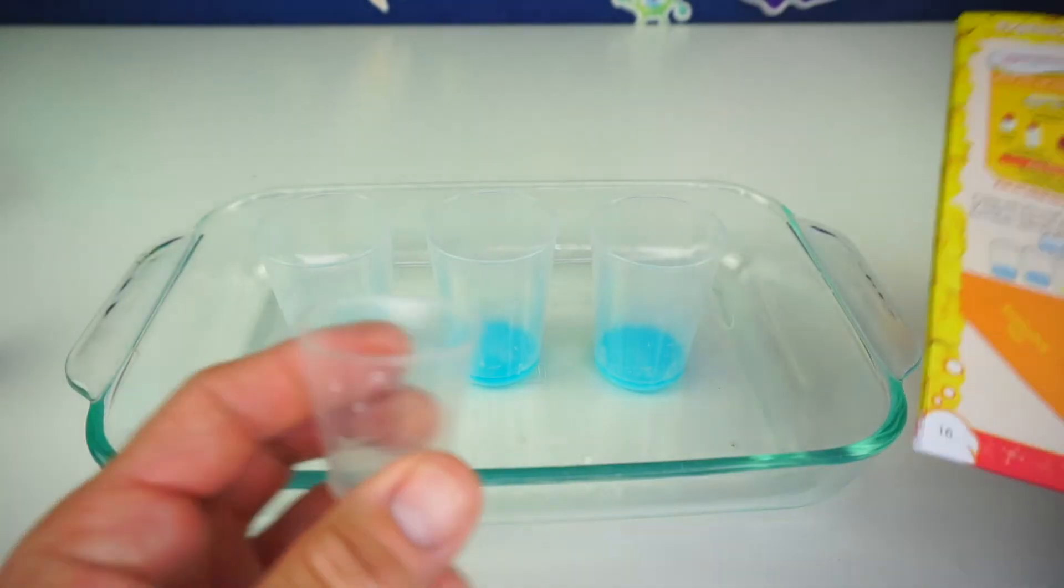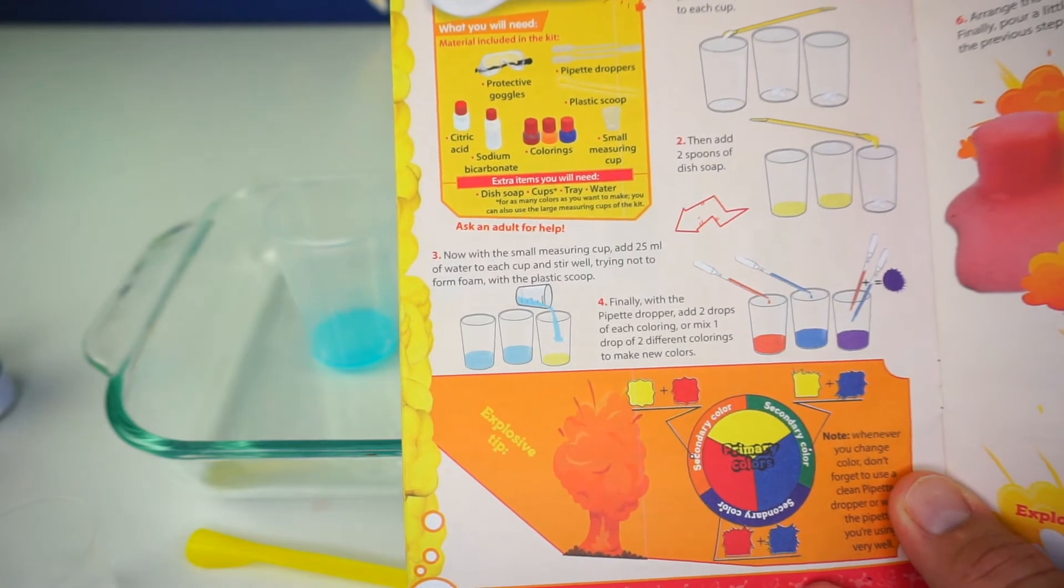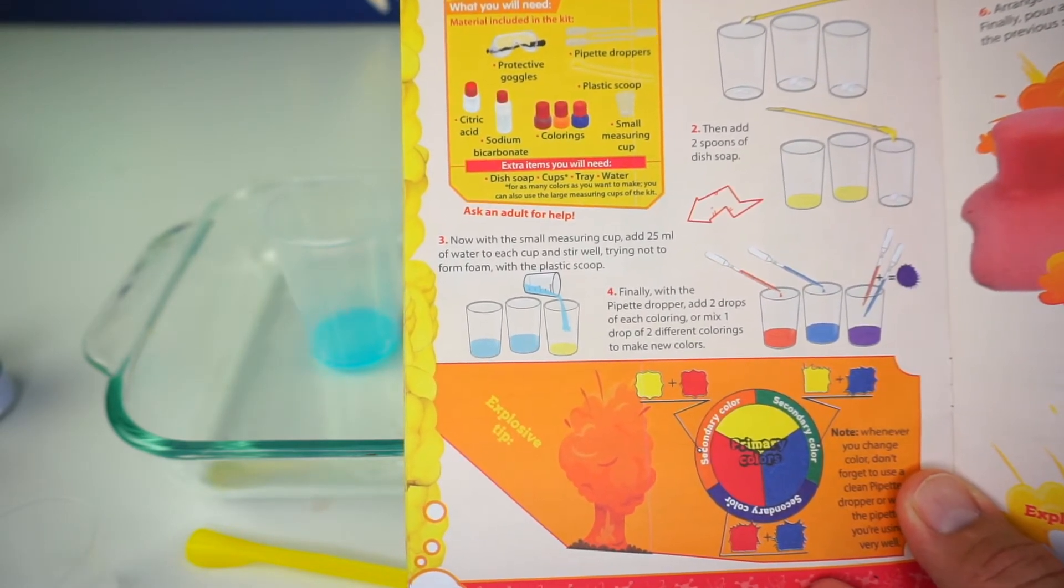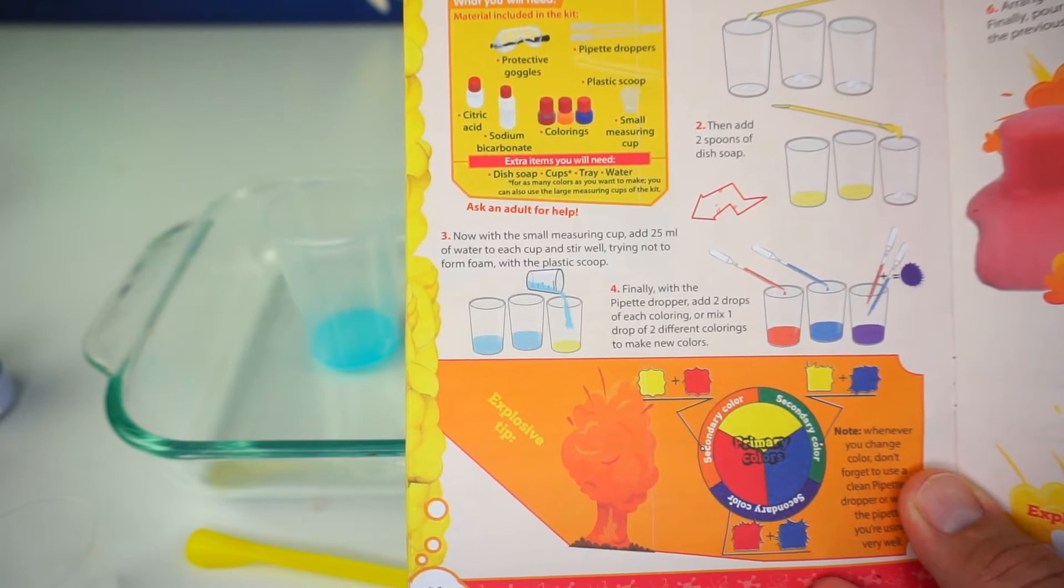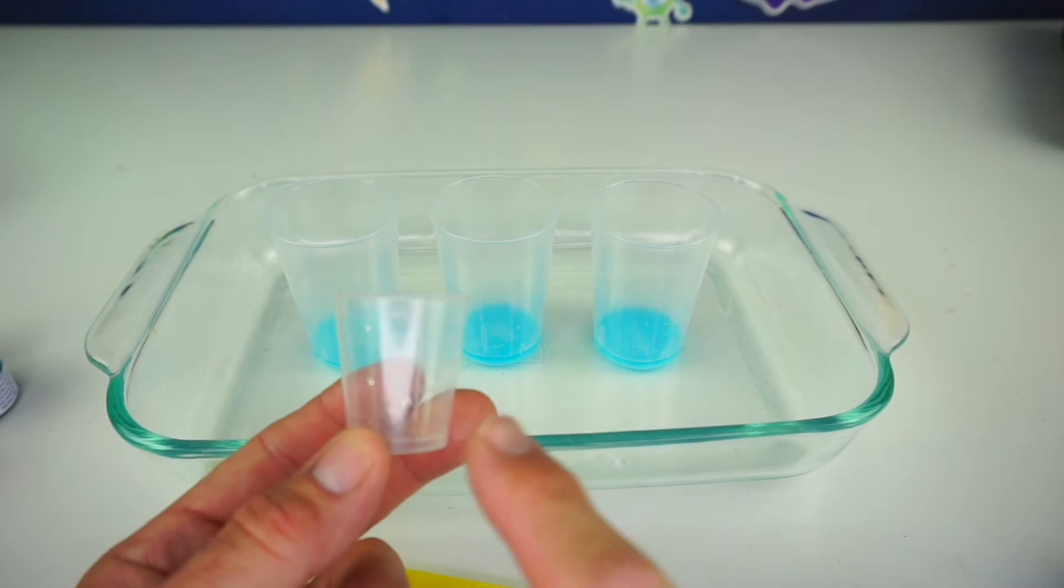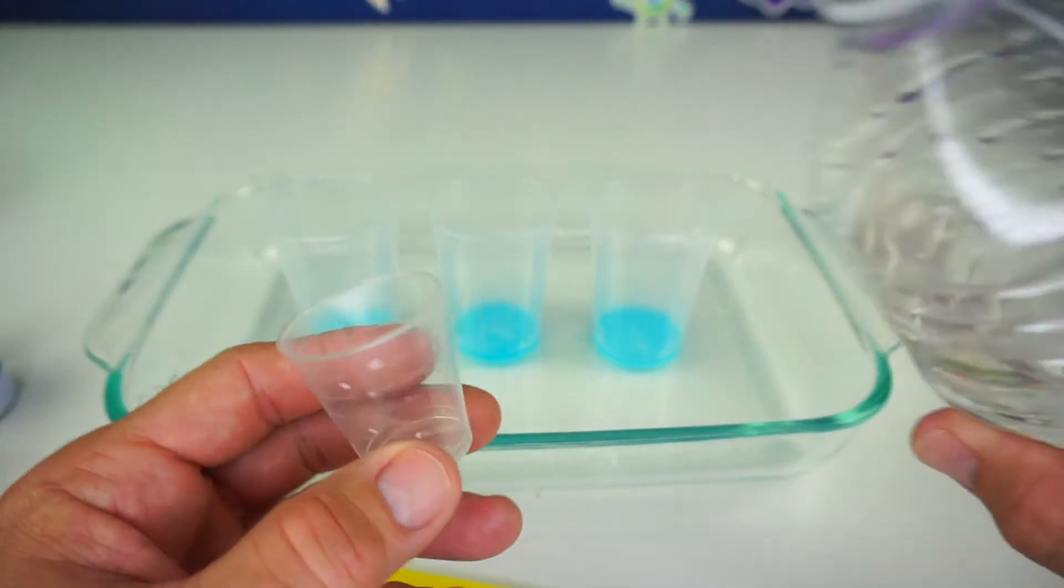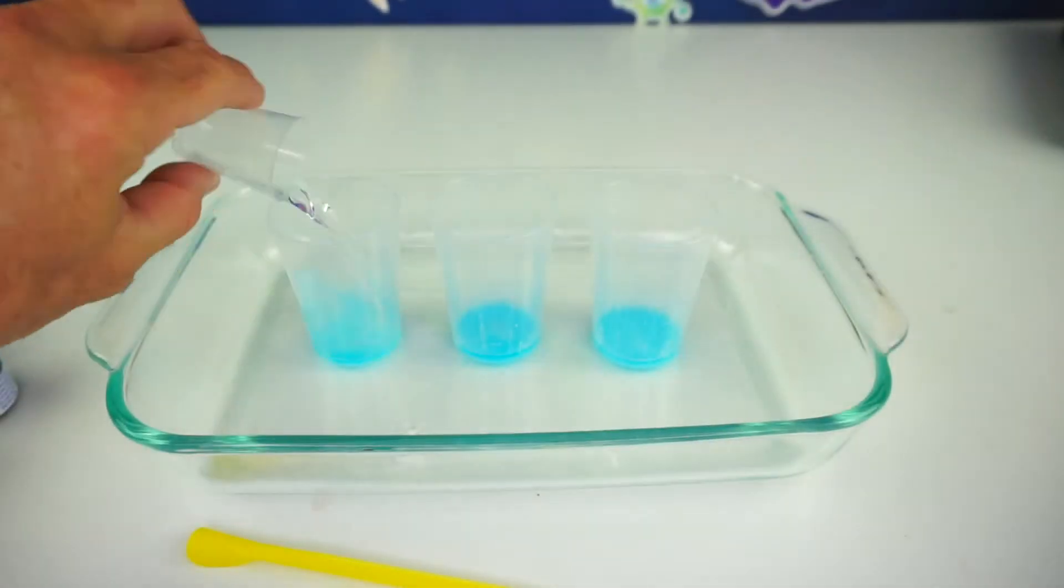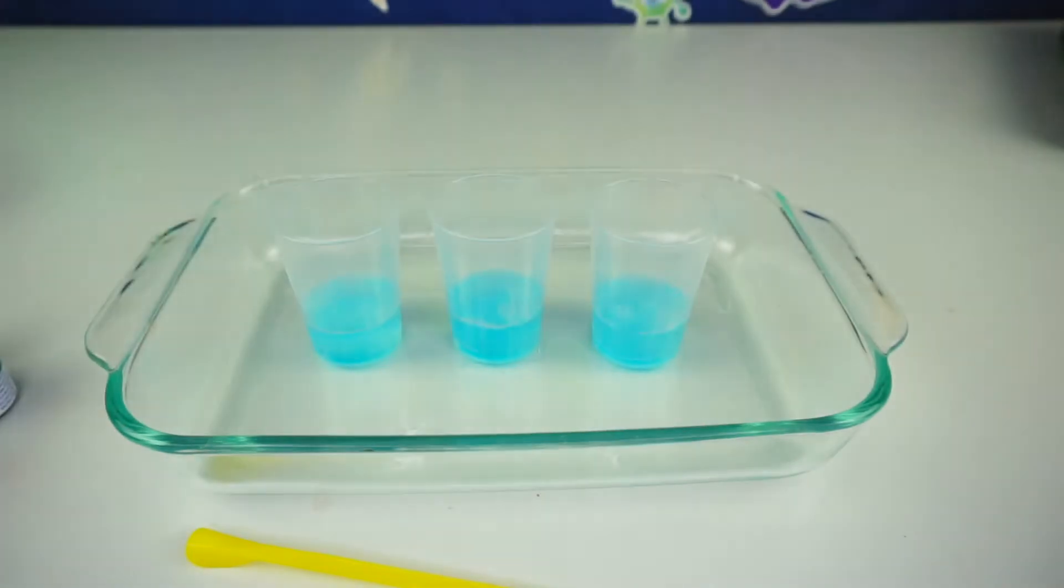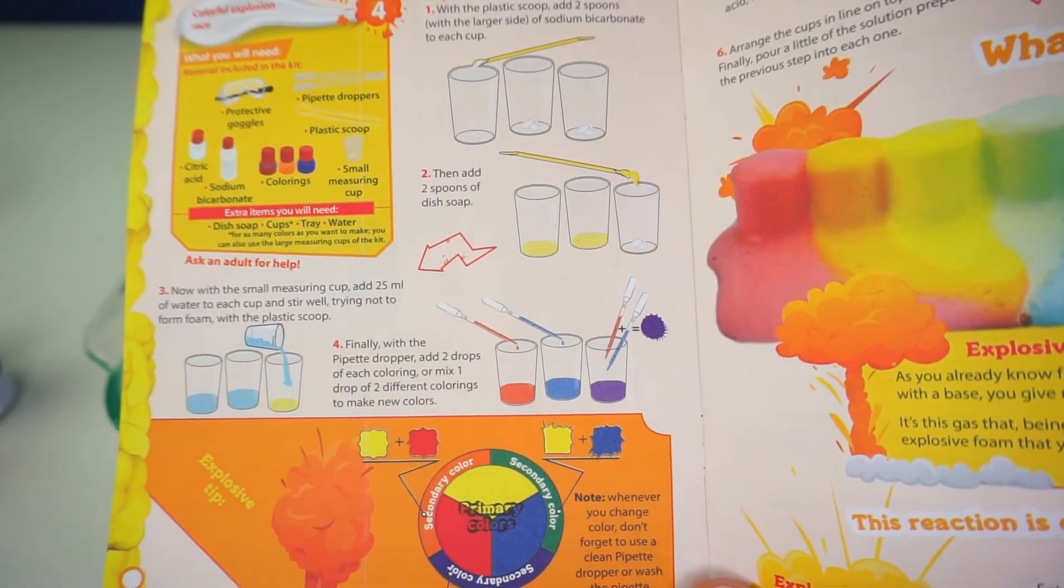I did wash all my tools before I went on to the next step. Step number three. It says, with a small measuring cup, add 25 millimeters of water to each cup. Stir well. Trying not to form foam with the plastic scoop. So this cup is 30 milliliters to the top. So right here is 25. So I'm going to fill each one with water. Okay, next we're going to add our colors with the pipet droppers to each cup.